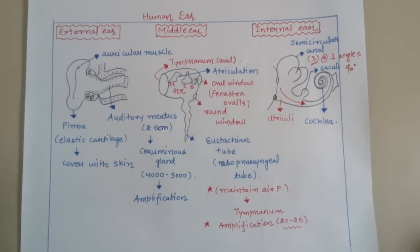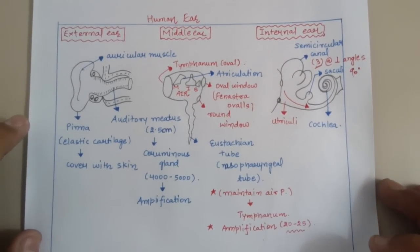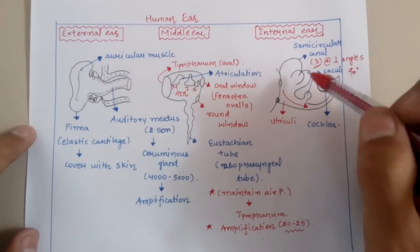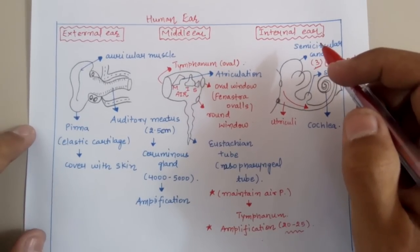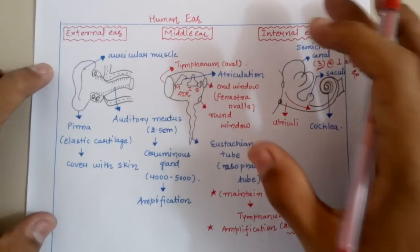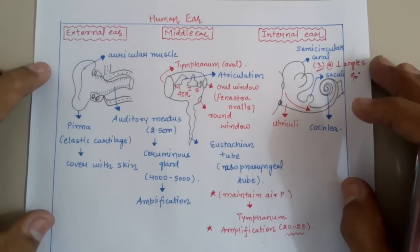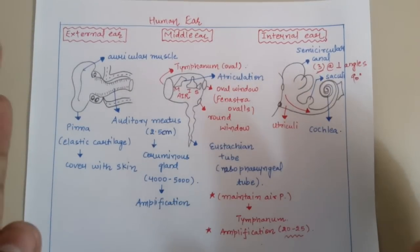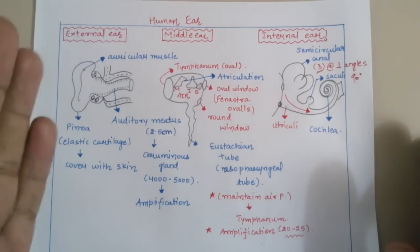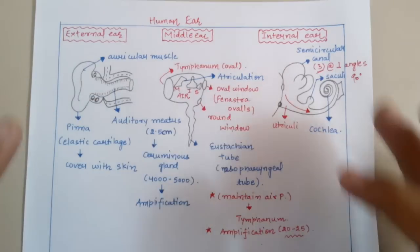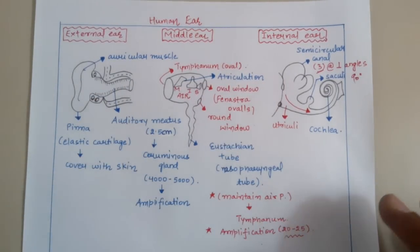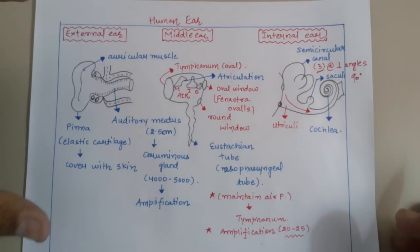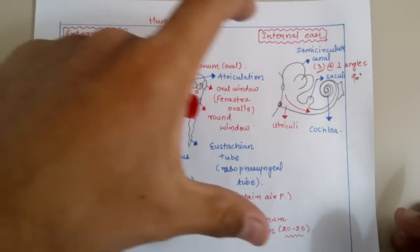Hello guys and welcome back to another video from Vipin Sharma Biology Tutorials. Today we are learning a very important topic — the human ear — which is important from an examination point of view and requested by many students. I have bifurcated this topic into three subtopics: the external ear, the middle ear, and the internal ear, to simplify the whole concept and diagram.